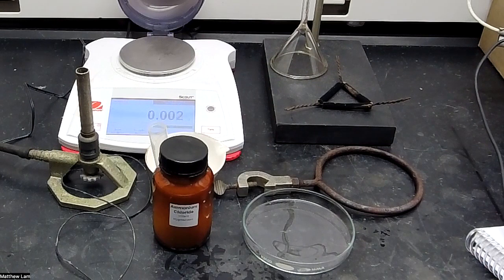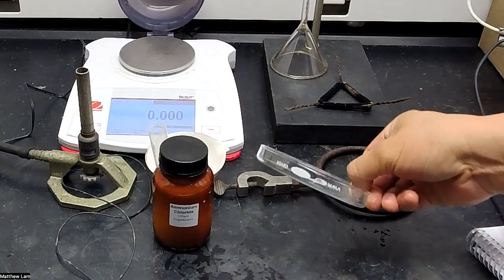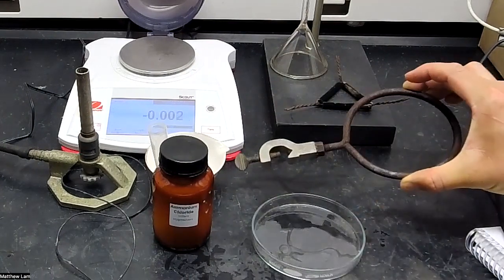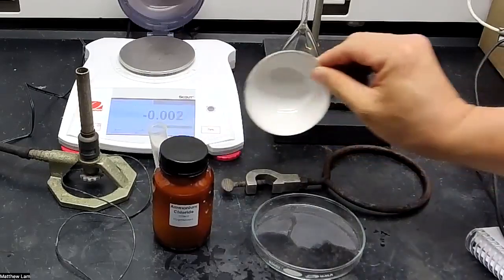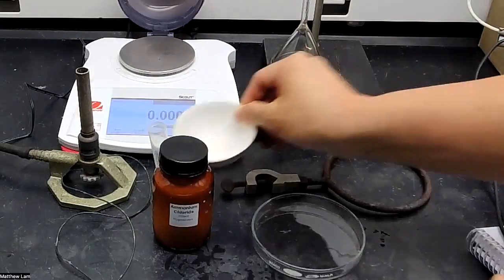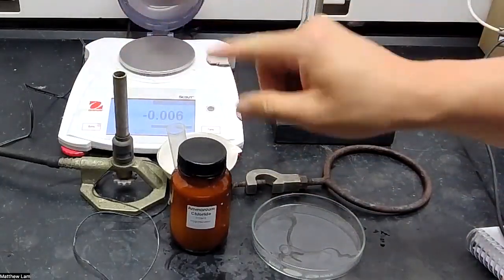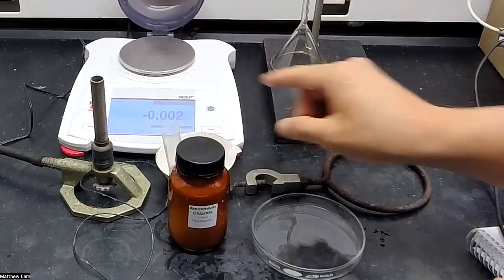Let's go over our general materials before we start the experiment. We have a petri dish or one side of it, a ring clamp, a porcelain evaporating dish, ammonium chloride, a Bunsen burner which I'm going to show you how to use in just a second, and a balance.